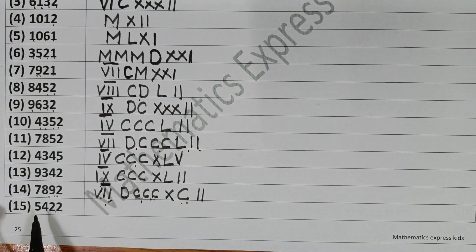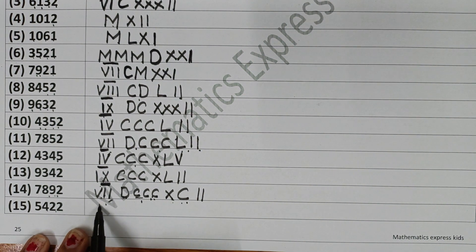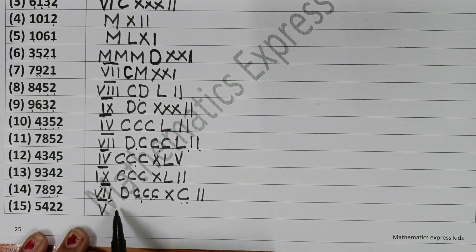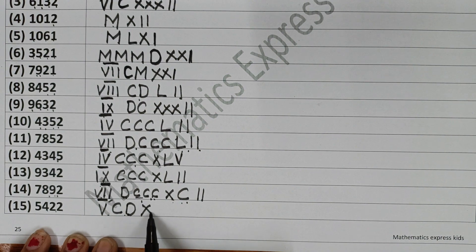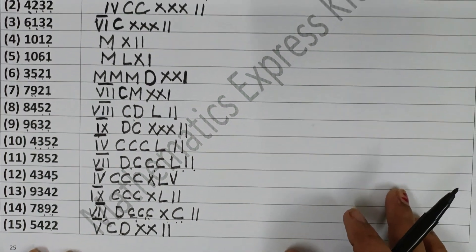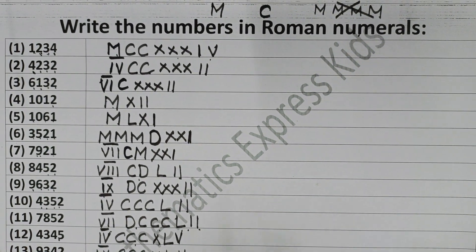Now the next one is 5422. For 5000, write V with a bar over it — that is 5000. For 400: write 500 and subtract 100 from it — CD — that is 400. Then 20 is XX and 2 is II. So 5422 is V-bar CDXXII. I hope this topic is clear to you. In the next video, I will come with my next topic. Till then, stay connected with us — thank you so much.